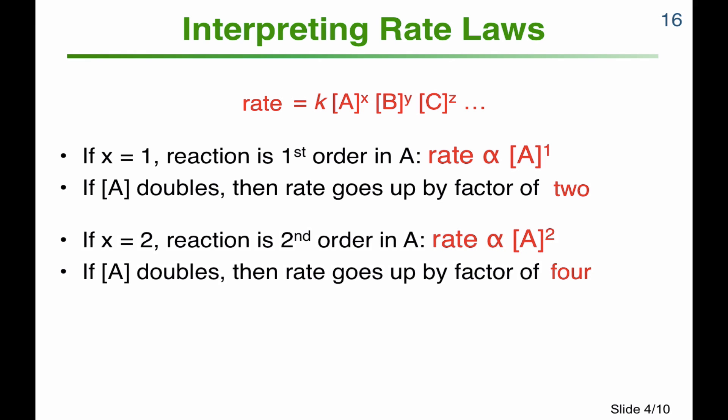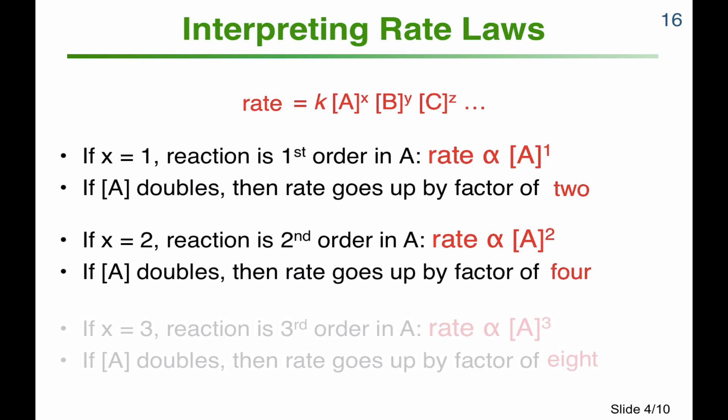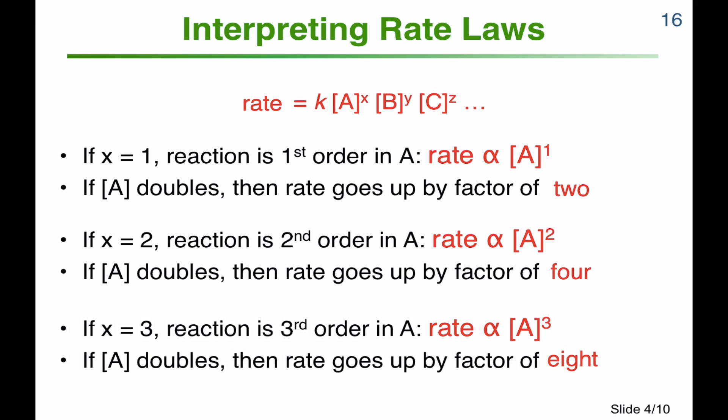If X turns out to be 2, the reaction is second order in A and the rate is proportional to the square of the A concentration. If we double the concentration of A, the rate would go up by a factor of 2 squared — 4. If the concentration of A is increased by a factor of 10, the rate goes up by a factor of 100. Less commonly, if X were 3, the reaction would be third order in A, and the rate proportional to the cube of the A concentration. Doubling A would increase the rate by a factor of 8 — 2 to the power of 3.